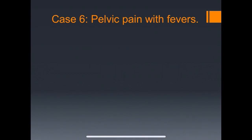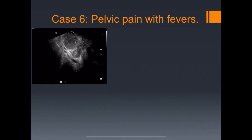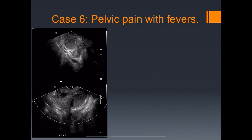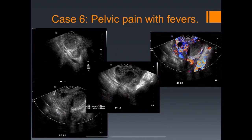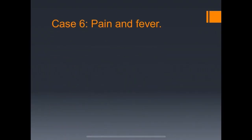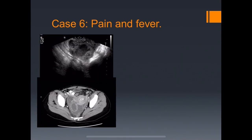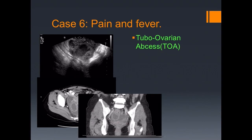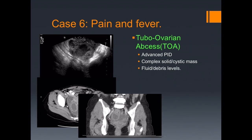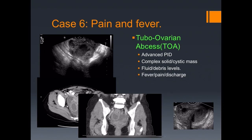Pelvic pain with fevers: the right adnexa shows multiple fluid-fluid levels, a large complex mass, and hypervascularity. On CT, an IUD is seen in place. This turned out to be a tubo-ovarian abscess — the IUD predisposes to PID. Features include a complex solid-cystic mass with fluid-debris levels, fever, pain, and discharge. Rupture with peritonitis can happen, so it's important to treat rapidly.